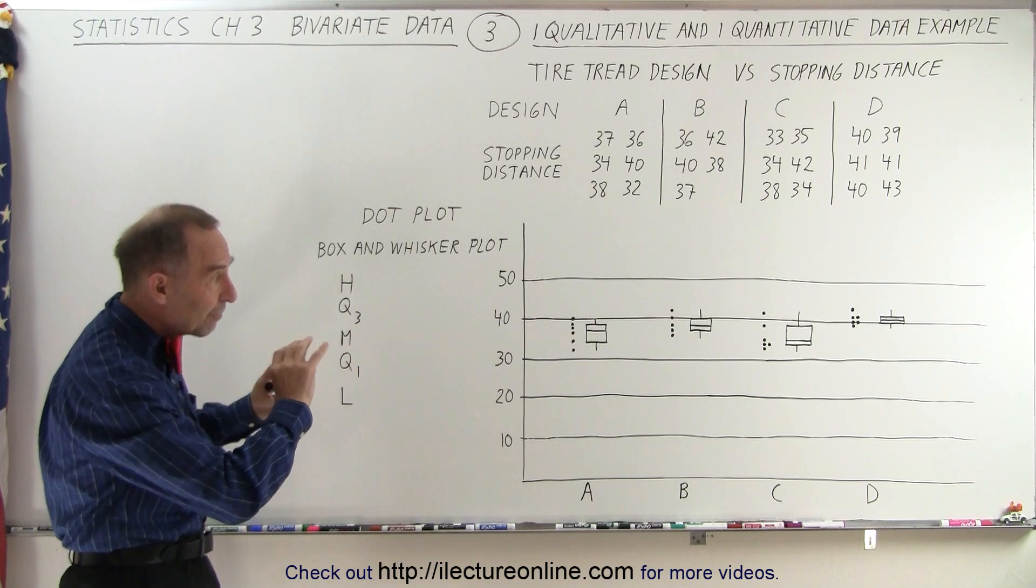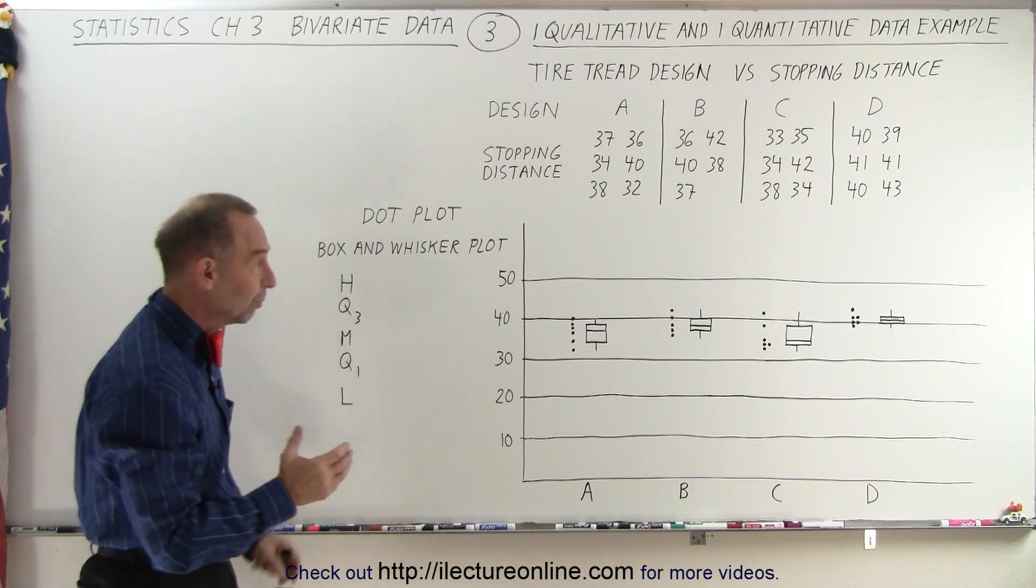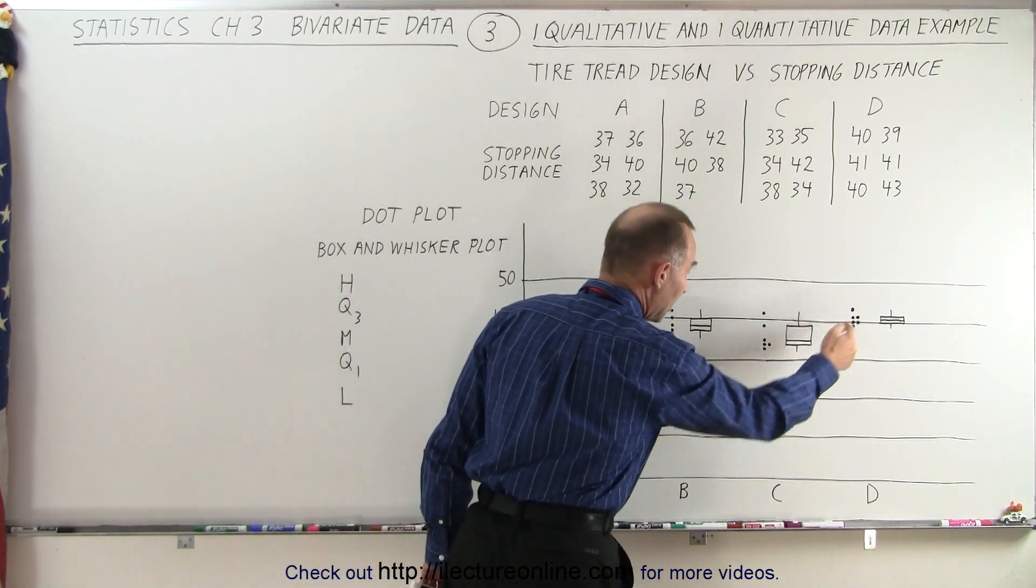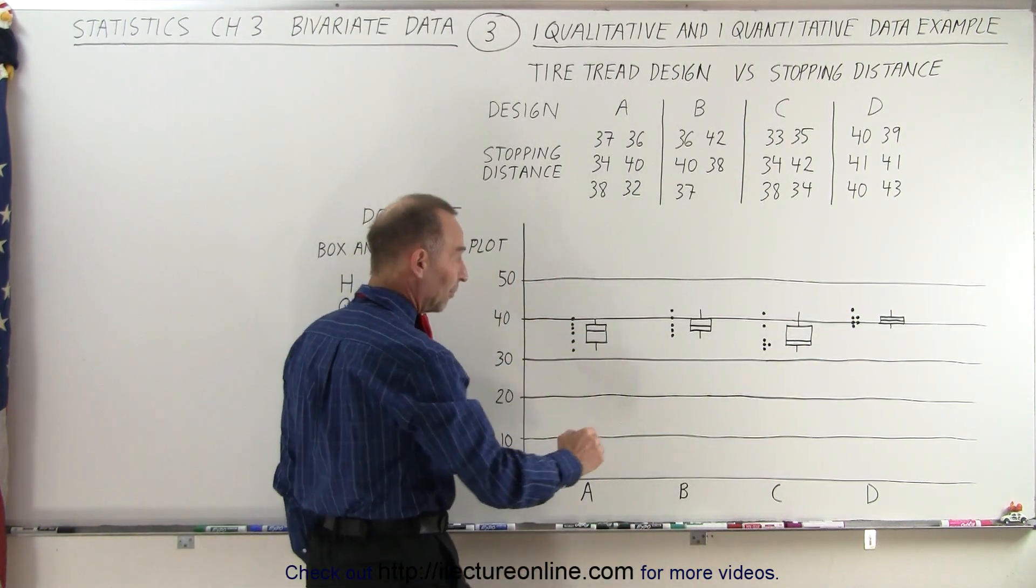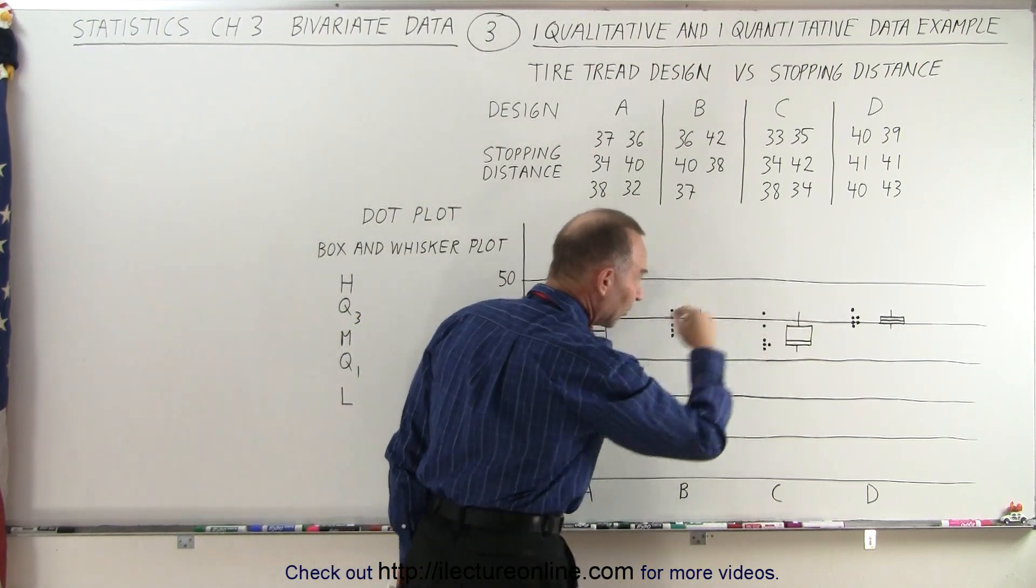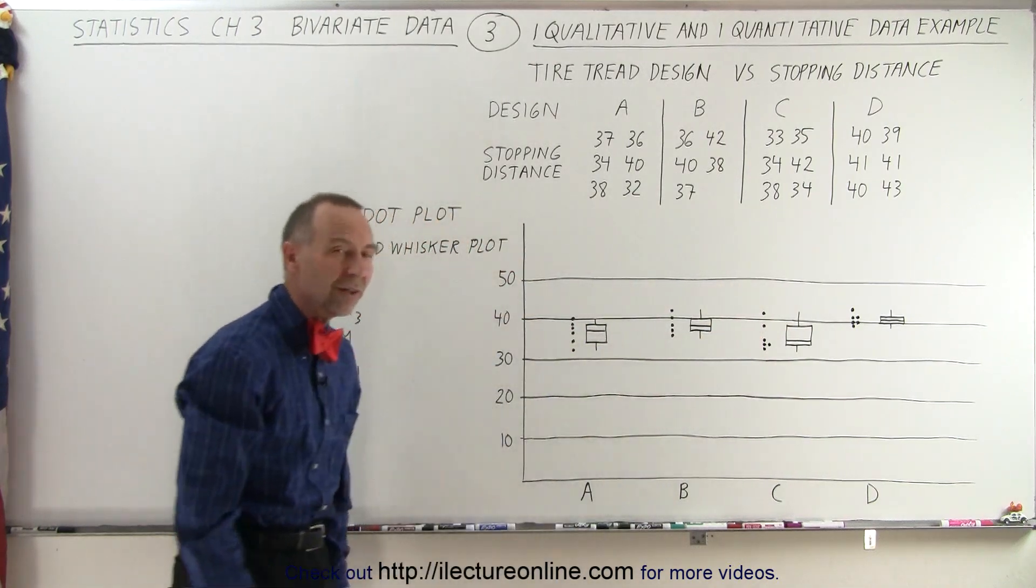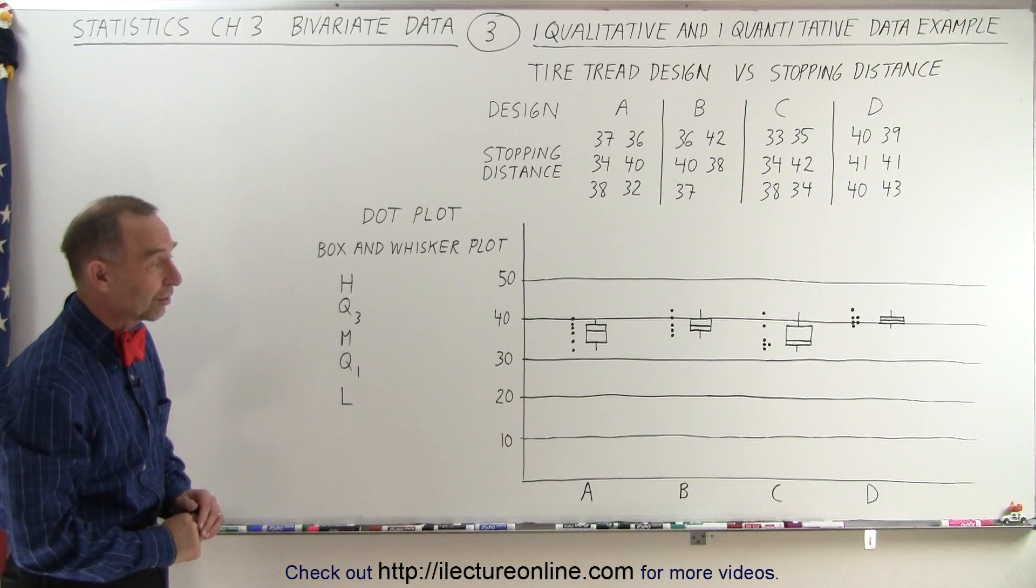They can give you a pretty good idea of how the data is distributed. Of course, if you're looking for a consistent performance, definitely tire D. But if you look for the best stopping performance, if you look at the median right here, it looks like tire C will give you the best stopping distance, but it's not consistent through all the tires of that type. So maybe we need to look at the manufacturing process.